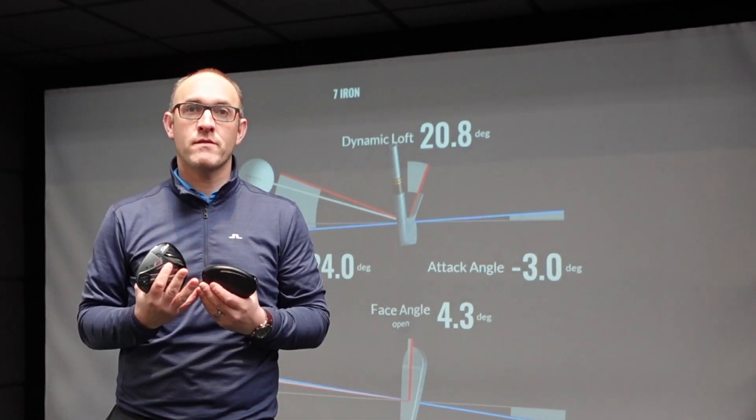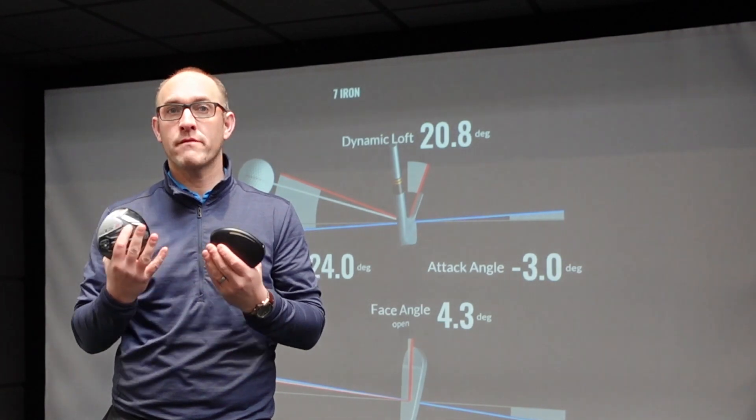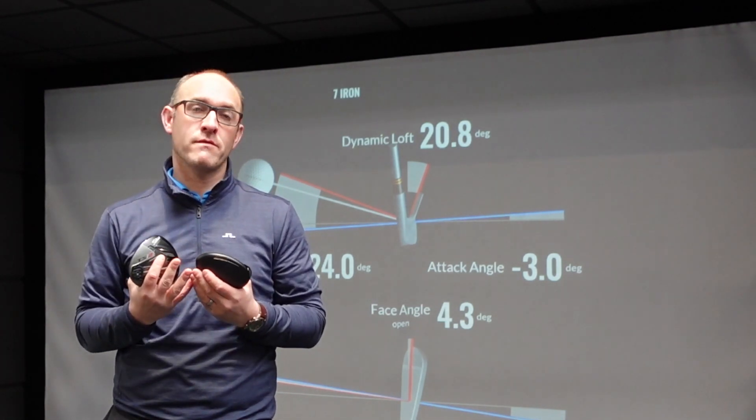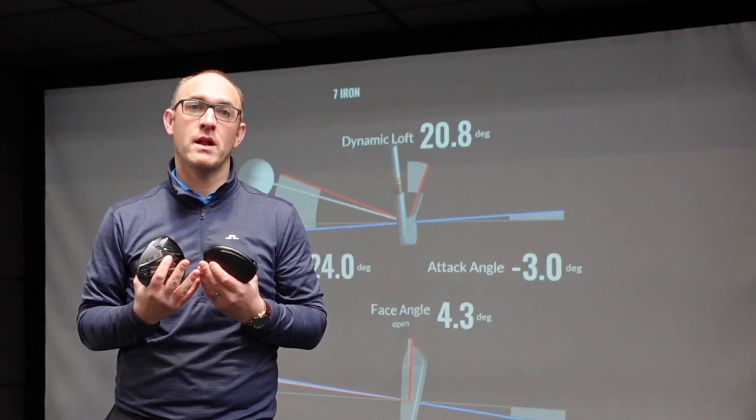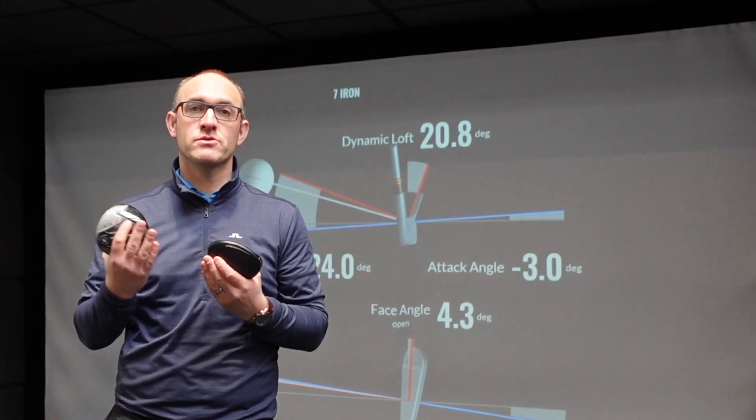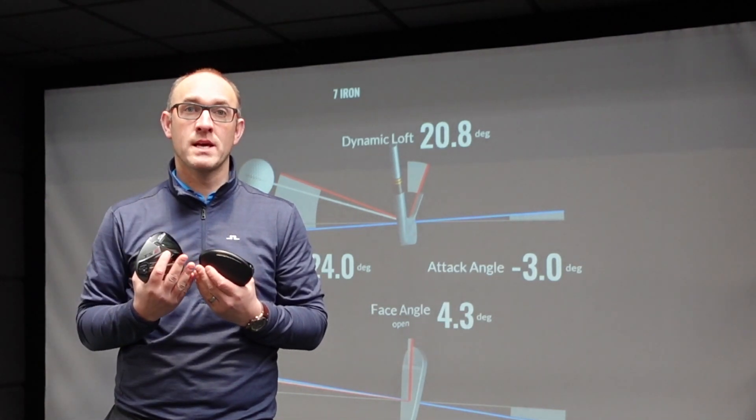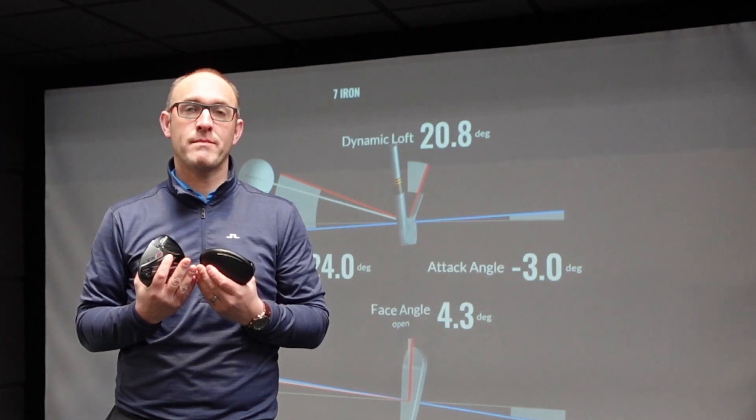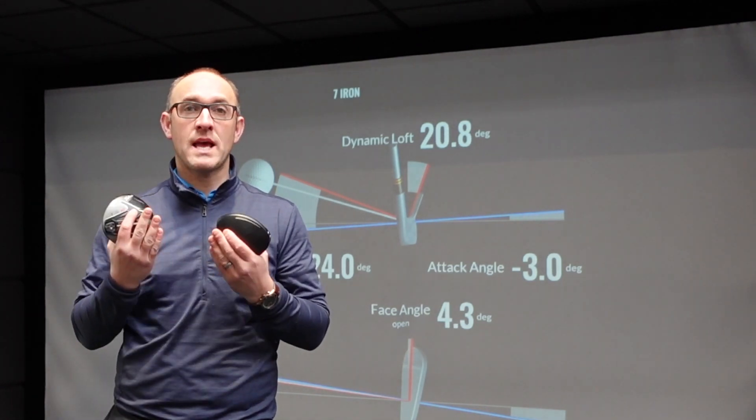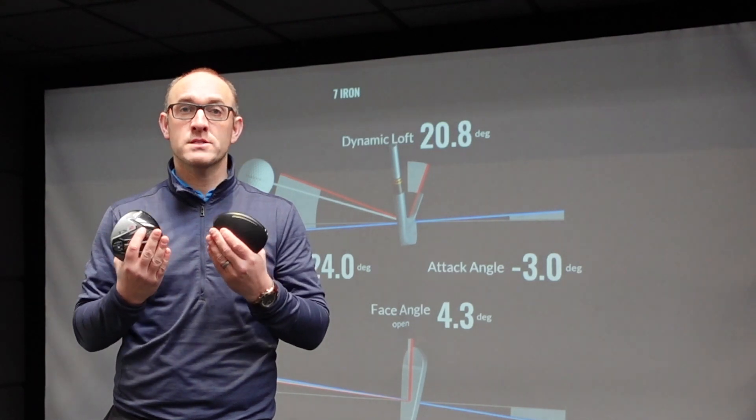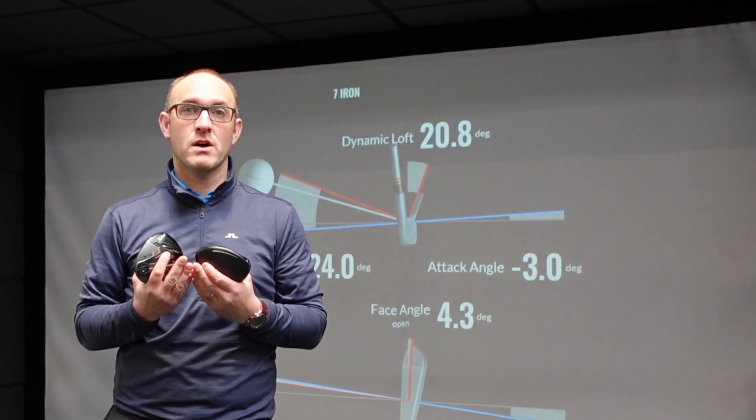For example, with a driver we're looking for a smash factor or an efficiency rating of 1.5. That means if you swing a driver 100 miles an hour, we would want you to get 150 miles an hour of ball speed. That will equate with the right spin parameters and launch conditions to a set amount of distance. So for us, there is no average clubhead speed or distance for a driver.